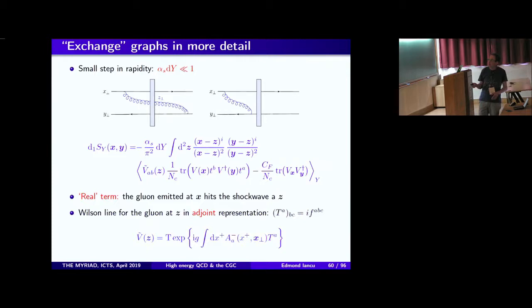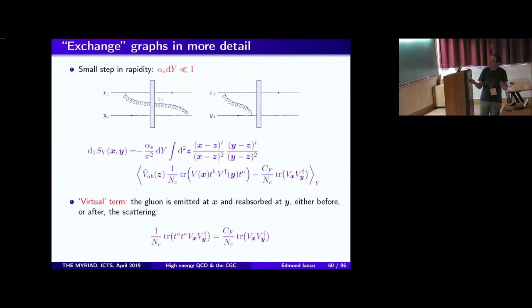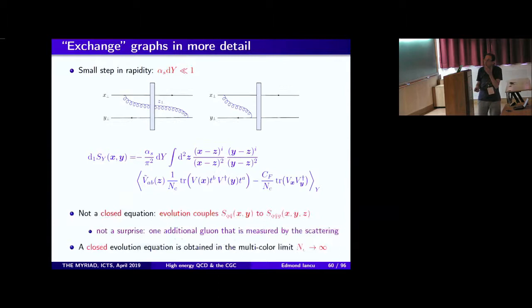Coming to the color structure. We have two pieces: real and virtual. In the real term, we have the scattering of a quark-gluon-antiquark system: a Wilson line for the quark at X in the fundamental representation, a Wilson line (complex conjugate) for the anti-quark at Y, a Wilson line in the adjoint representation for the gluon at Z, with color matrices T^A and T^B for the emission vertices, and Z integrated over. In the virtual piece, only the original quark and anti-quark scatter — same color factor as the original dipole — plus a factor C_F from the trace T^A T^A.